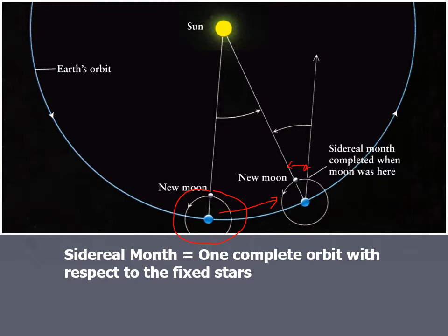So, if you watch relative to the background stars, it takes the moon less than one synodic month to make one complete circuit of the sky. It's really about 27 and a third days to complete one cycle from star to star.